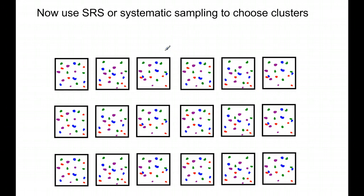So if I wanted to, let's say, ask three clusters, I might number them 1, 2, 18. I'll just go up to 6 here. But you could go all the way to 18. And then randomly generate a number, and let's say I get the number 3.